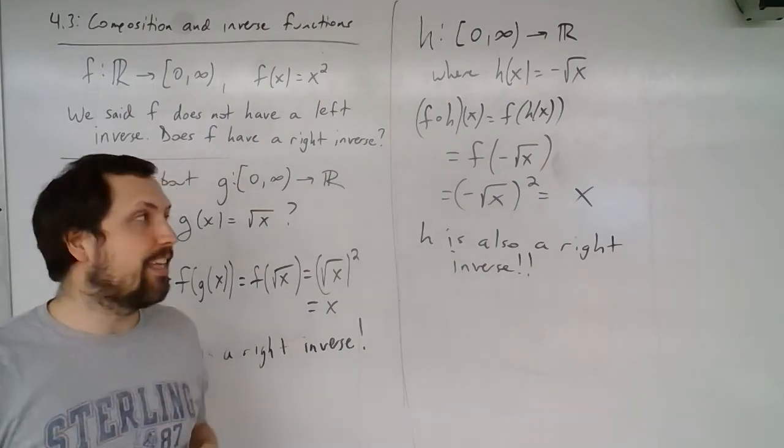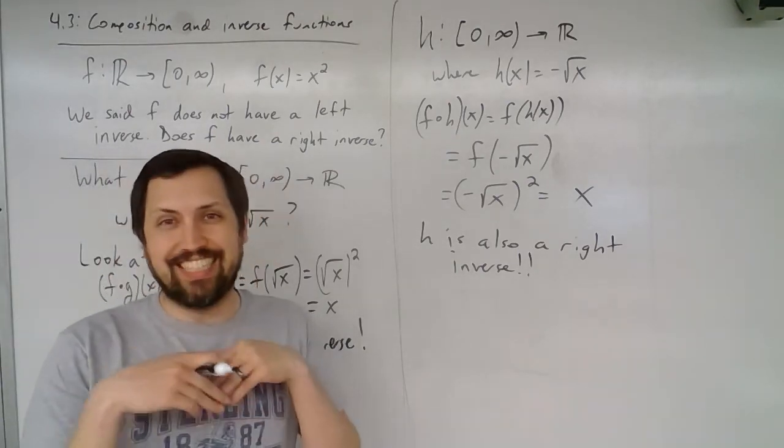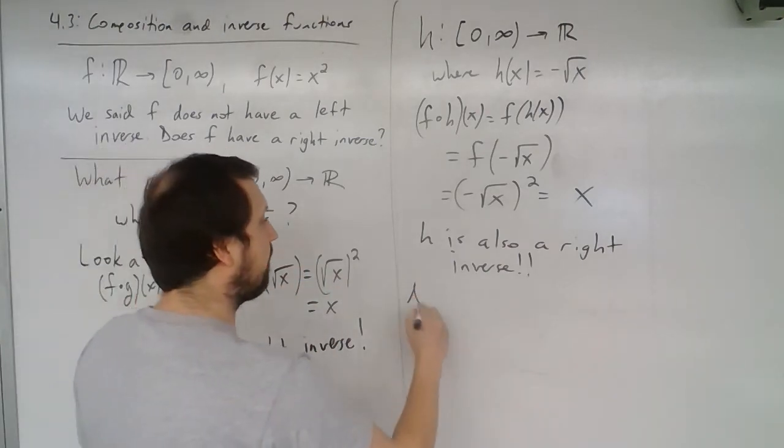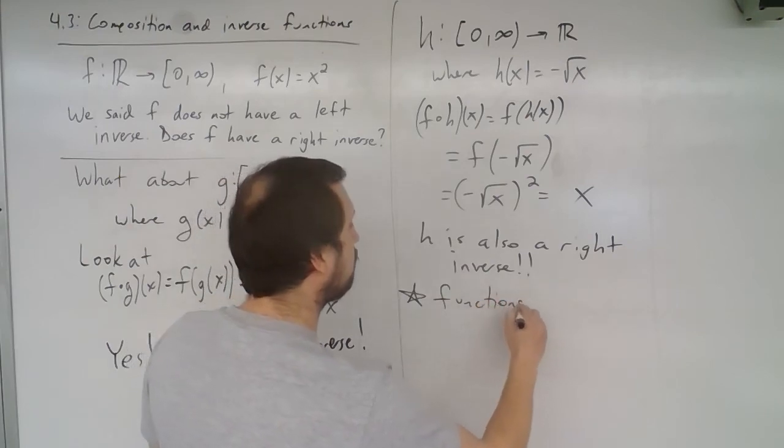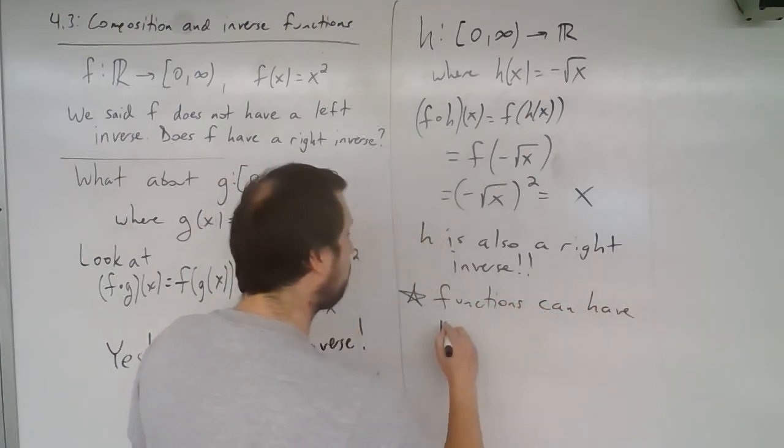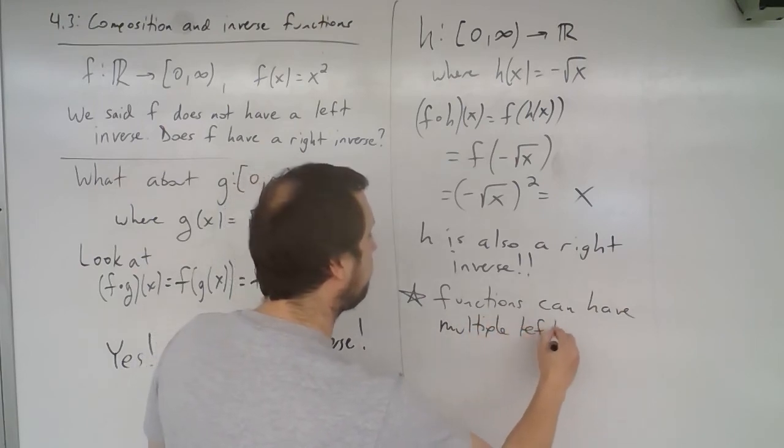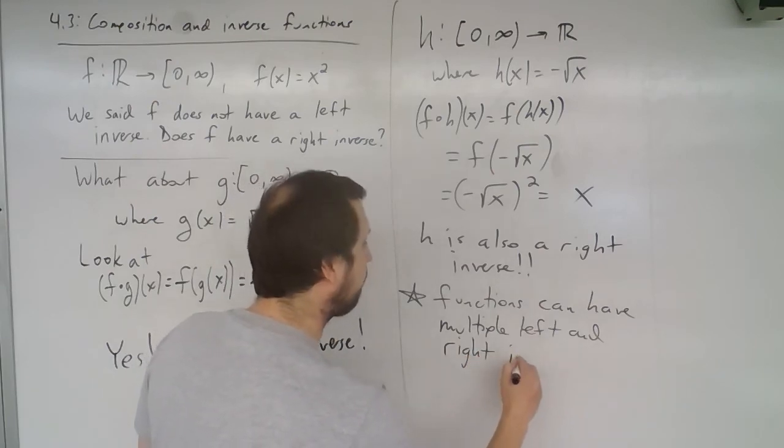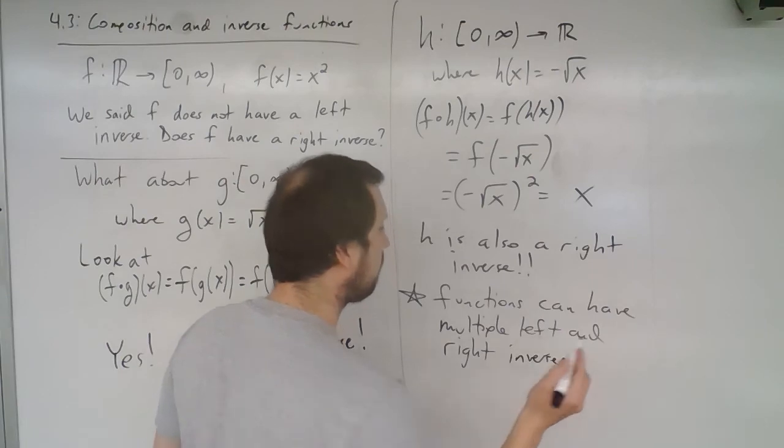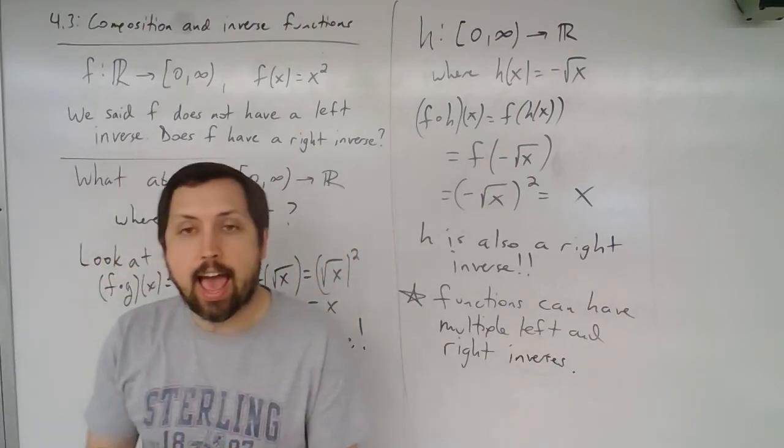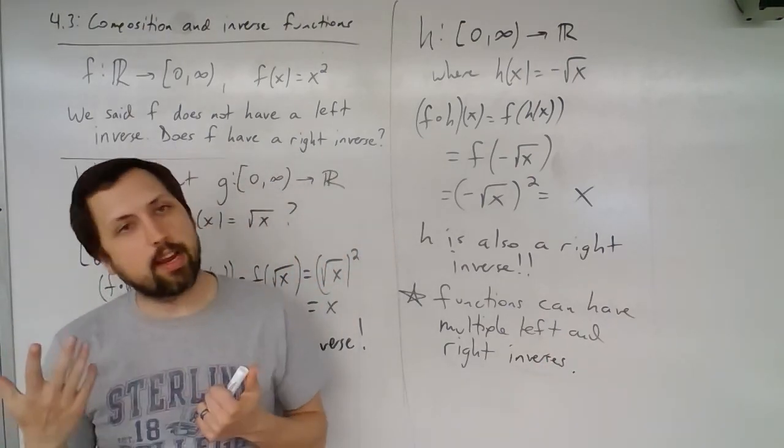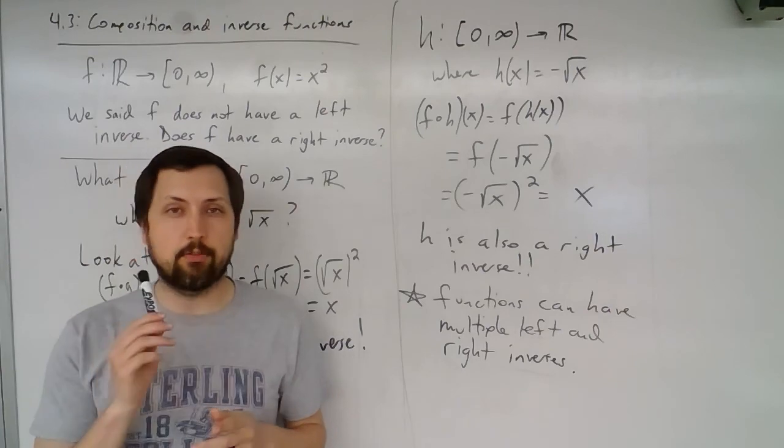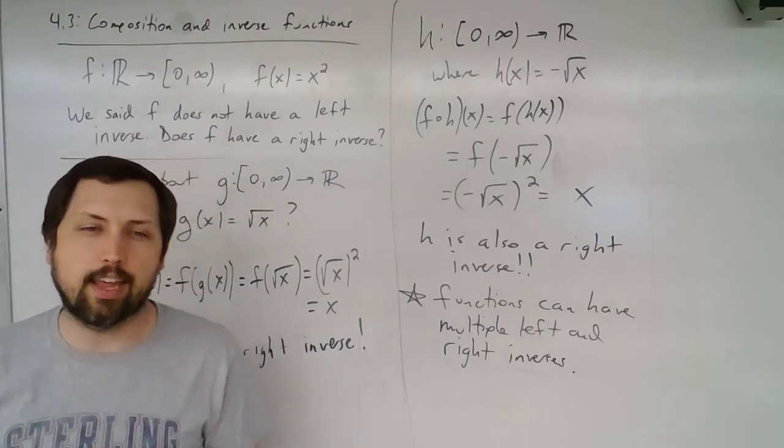So what that means is that not only do we possibly have existence, we might not have uniqueness here. So functions can have multiple left and right inverses. So if it has a left inverse, it might have more than one. If it has a right inverse, it might have more than one. So that's, again, something very unique that we have to be careful of when we're looking at left and right-hand inverses.